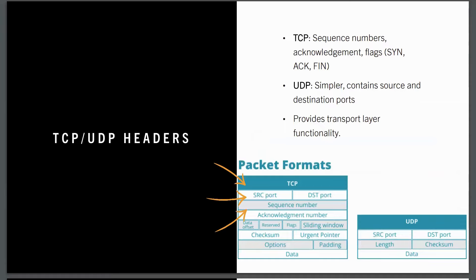TCP and UDP headers. The TCP header is more complex because it ensures reliable data transmission — it includes sequence numbers, acknowledgements, and flags. The UDP header is simpler compared to TCP because it does not guarantee delivery or order; it only includes the source and destination ports. UDP is used in situations where speed is more important than reliability, like streaming or gaming. Both TCP and UDP operate at layer four, managing the transport of data between devices — TCP is focused on reliability while UDP prioritizes speed, and both are essential for different types of network applications.